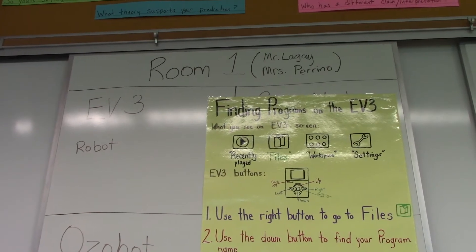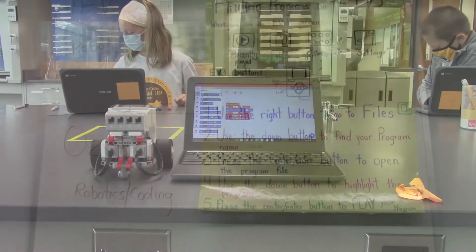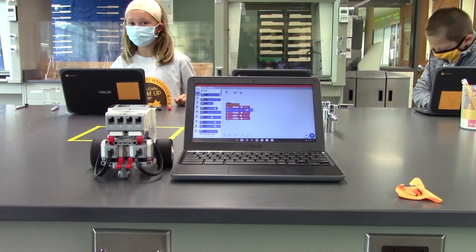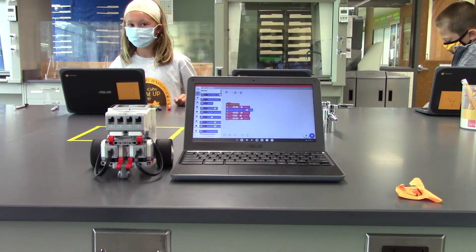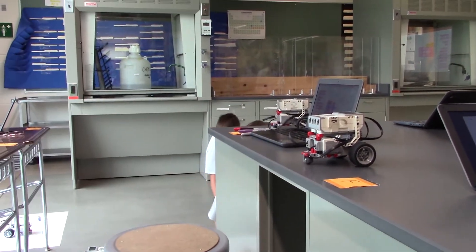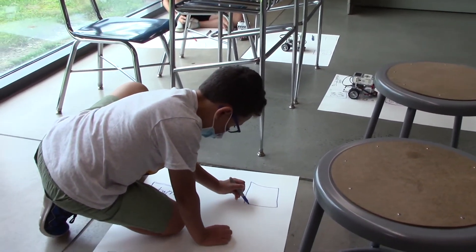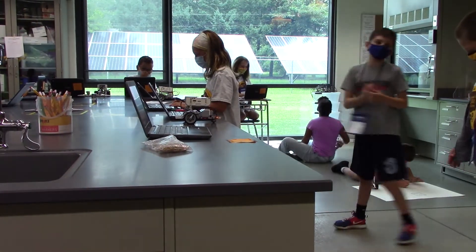Students use code and block coding to program the robot to do different tasks, moving forward and backward, making turns, making sounds, making displays, and then students use this knowledge to solve a variety of different obstacle courses that require the students to use problem solving, collaboration, trial and error to make their robot successfully complete these obstacle courses.